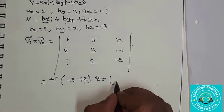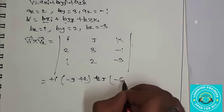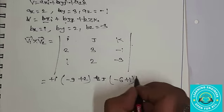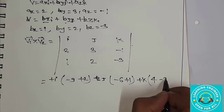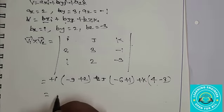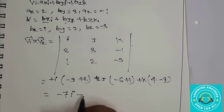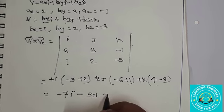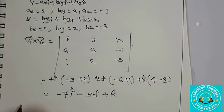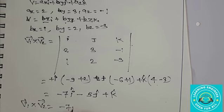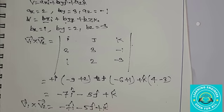2 into minus 3 minus 6, 1 into 1 plus 1. Here we have to solve this: minus 6i minus 5j plus k. We put a cap because it is compulsory, so our final answer is v1 cross product of v2 vector is equal to minus 7i minus 5j plus k cap.